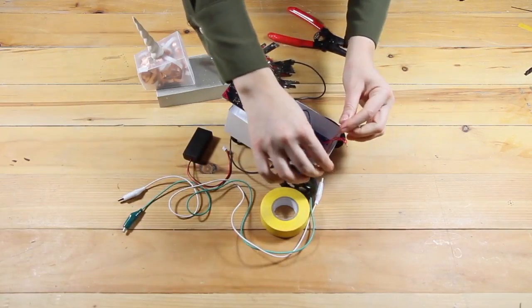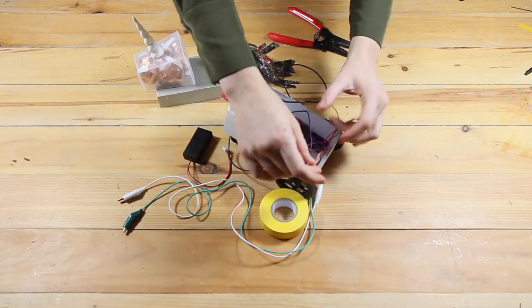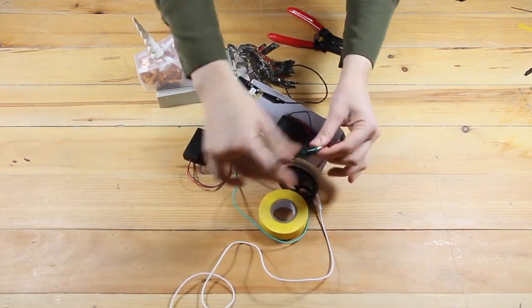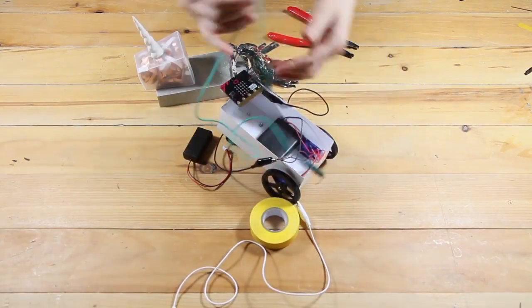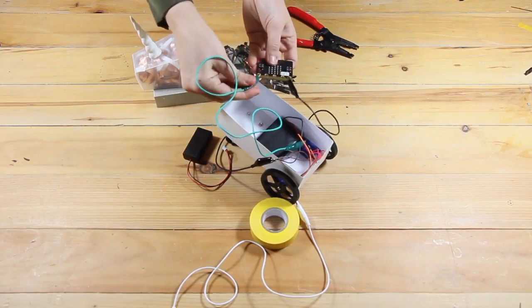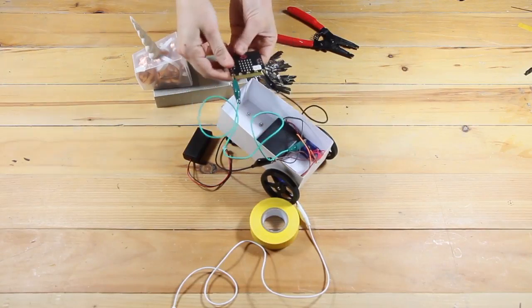Next we're going to take the orange cable coming out of the servo on the left—that's the one with the sticker on the top—and we're going to attach it to a crocodile clip. The other end of that crocodile clip should go on pin zero, like so.